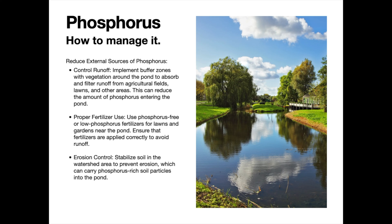We know what phosphorus is, where it comes from, and that it feeds algae — but how do you manage it if you have a problem? You want to test for it. I typically suggest finding a lab locally or statewide, or you can use simple test strips — I'll include a link below. Those are general but will give you an idea of where your phosphorus level is in a pond. For more specific numbers, have it professionally done. It'll be measured in parts per million, milligrams per liter, or maybe parts per billion, so you can see where you stand.